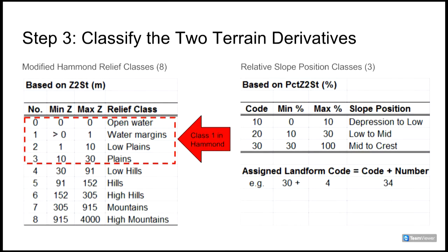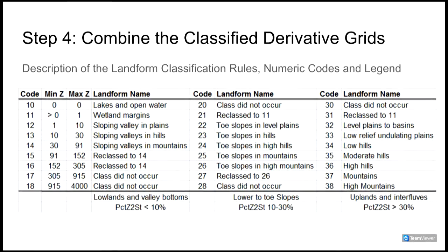In Step 3, we classified the numeric values into 8 classes of relief based on Z to stream and 3 classes of slope position based on %Z to stream. The relief classes are essentially those proposed by Hammond, except that we have subdivided Hammond's class 1 of 0–30m into 4 finer subclasses. The finer differentiation allows us to identify and map important differences in low relief areas. In Step 4, we add the numeric code values for the 8 relief classes to the 3 code values for relative slope position classes, producing 24 unique combinations plus one additional code for open water of 10. Some of these possible combinations simply never occur, while others occur to such a limited extent that they can be ignored and removed.